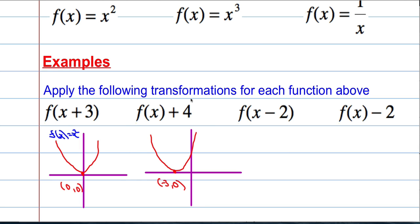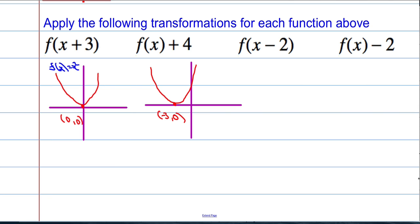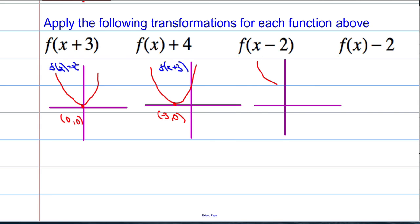Let's do f of x plus 4. So f of x plus 4 — I'm just adding something on the end of the function. If you remember correctly, this is a vertical translation by a value of 4, so it should move up the graph by 4. We know that this point here is going to be the point 0, 4. And this is the function f of x plus 4.